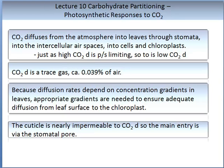CO2 diffuses — described here as CO2D — from the atmosphere into the leaves through the stomata, into the intercellular air spaces, then into the cells, and finally into the chloroplast. Just as high CO2 diffusion is photosynthetically limiting, so is low CO2 diffusion. CO2 is a trace gas with an approximate concentration of 0.039% of air. Because diffusion rates depend on concentration gradients in leaves, appropriate gradients are needed to ensure adequate diffusion from the leaf surface to the chloroplast. The cuticle is nearly impermeable to carbon dioxide, so the main entry is via the stomatal pore.